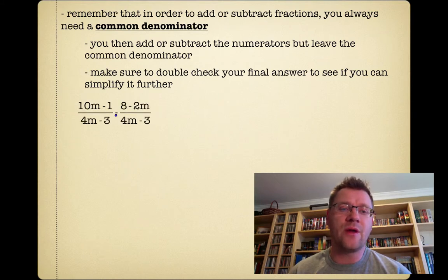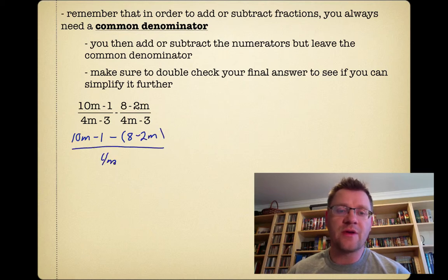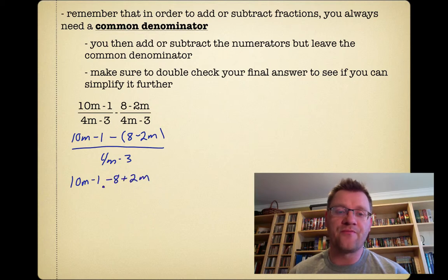So what we've got here is 10m minus 1 minus 8m minus 2m, and both these have the same denominator of 4m minus 3. So we could write it like this. Now I'm writing it with the brackets to show you that you have to be careful when you're subtracting because you're going to change the sign on both these terms in the second fraction. So we actually get 10m minus 1 minus 8 plus 2m all over 4m minus 3.